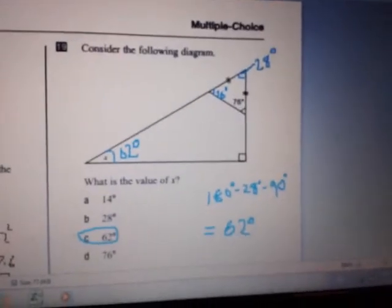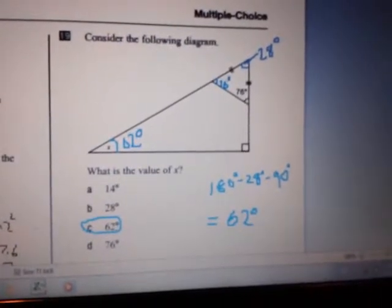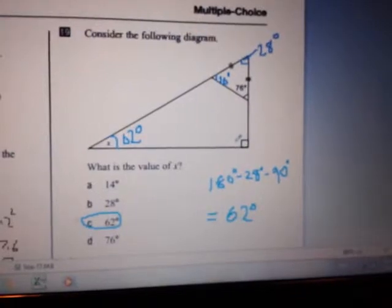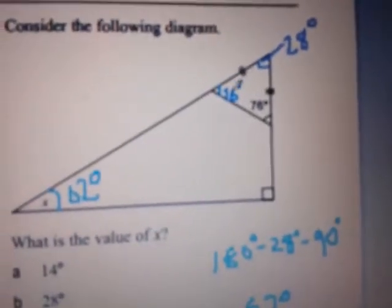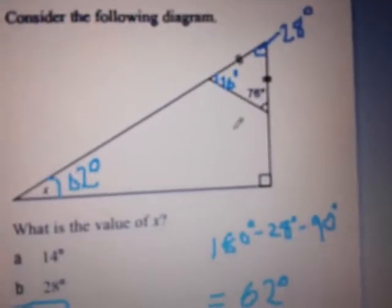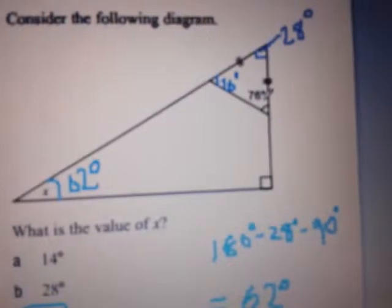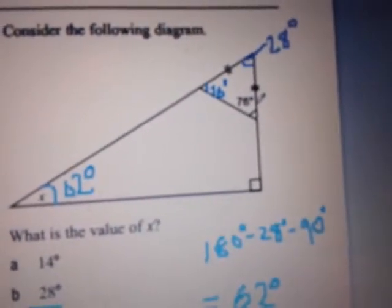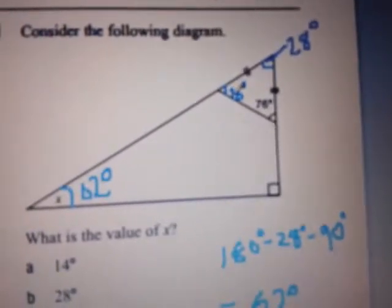Now on to question 19. Consider the following diagram. We have a right angle triangle, and we know that this is 90 degrees here. We have an isosceles triangle within this triangle, and we're given that one of the angles of this isosceles triangle is 76 degrees. Since this is an isosceles triangle, we know that this other angle here is also 76 degrees.